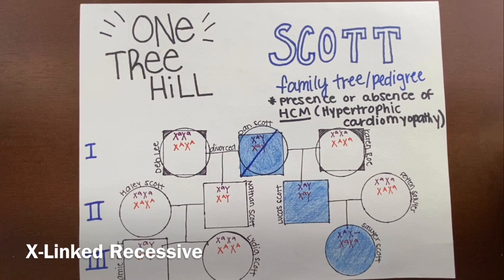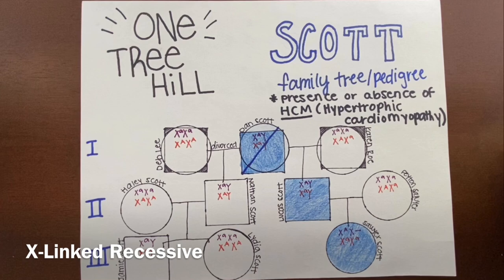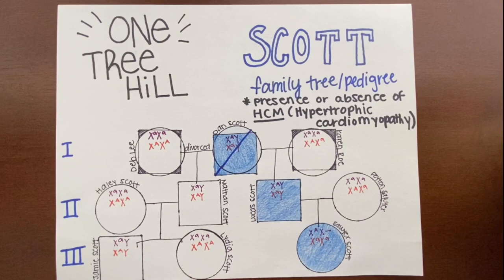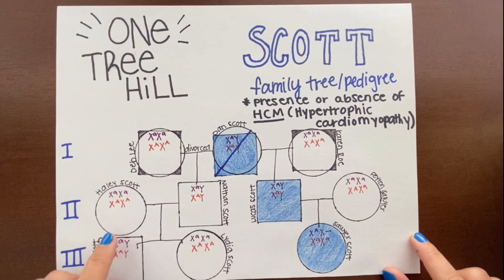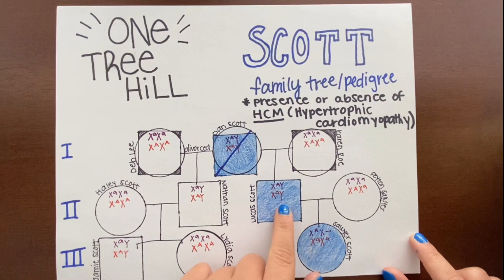All the females who had the trait had to have two of the recessive alleles. And all of the males who had not shown the phenotype had X big A, Y. After doing my Punnett squares, I saw that Nathan was able to get a big A from his mother and a Y from his father. Jamie and Lydia both got big A's from both of their parents. Lucas got a little a from his mother and a Y from his father. And Sawyer got little a's from both of her parents.